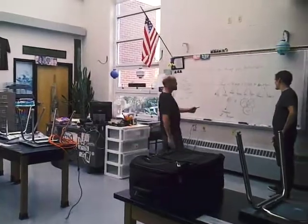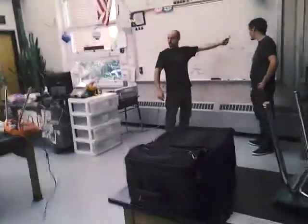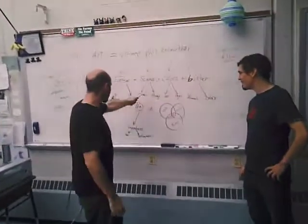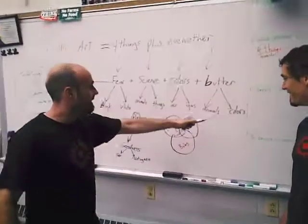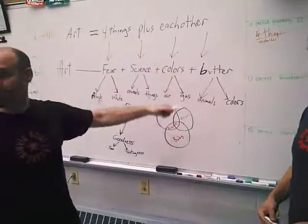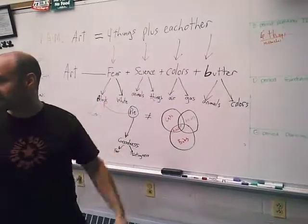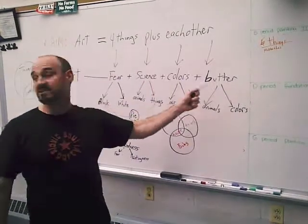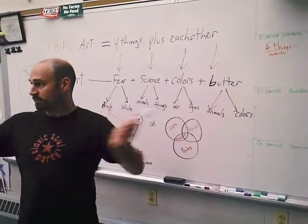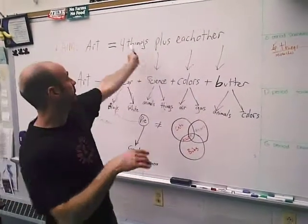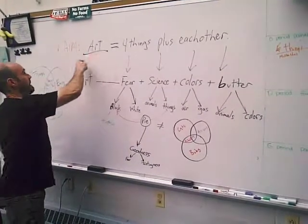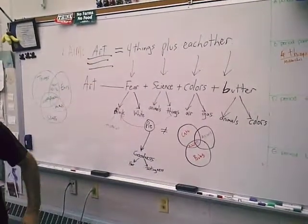And finally we have butter, which is made of animals and also colors. So colors is a main ingredient but is also a thing of the butter. Even though it's plus that thing with all them different things, plus each other equals art.